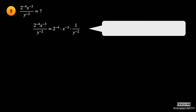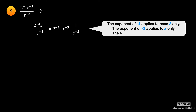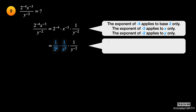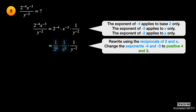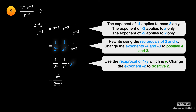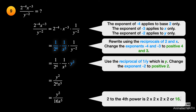The exponent of negative 4 applies to base 2 only. Negative 3 applies to x only, and negative 2 applies to y only. Rewrite the expression using the reciprocals of 2 and x, then change their exponents from negative 4 and negative 3 to positive 4 and 3. Rewrite 1 over y raised to the negative 2 as y squared. Simplifying it will show y squared over 16x cubed.